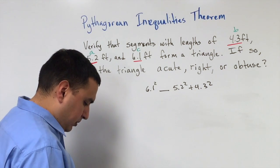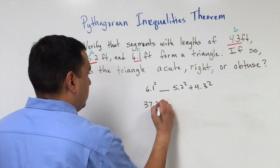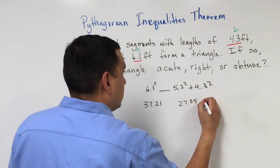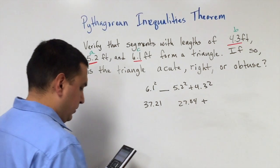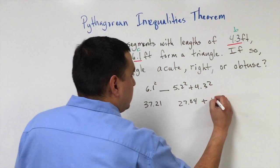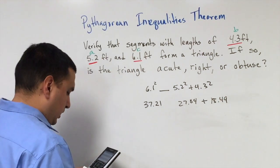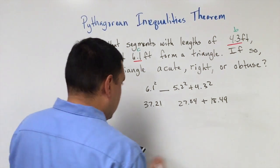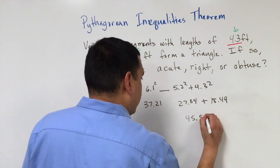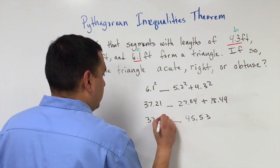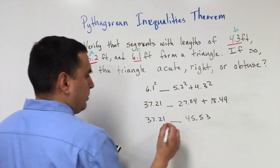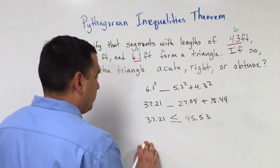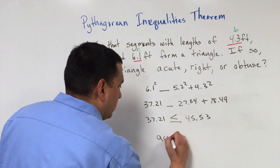Using my calculator, 6.1 squared is 37.21. 5.2 squared comes out to be 27.04 and then 4.3 squared is 18.49. If I add 18.49 and 27.04, I get that this is 45.53. And this is 37.21. 37.21 is less than 45.53. So that tells me my c squared is less than my a squared plus b squared. So that tells me that this is an acute triangle.